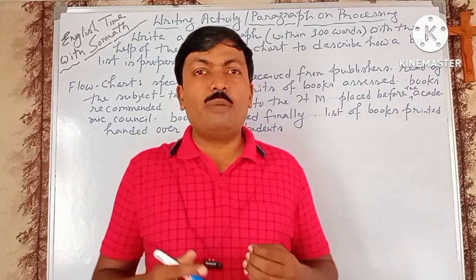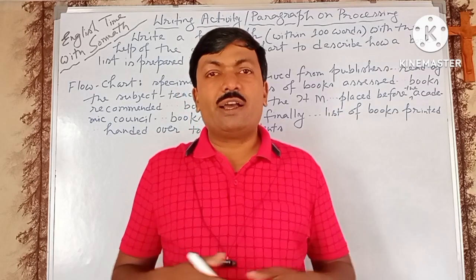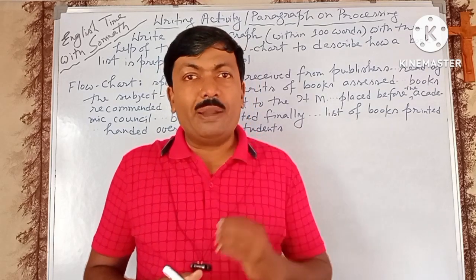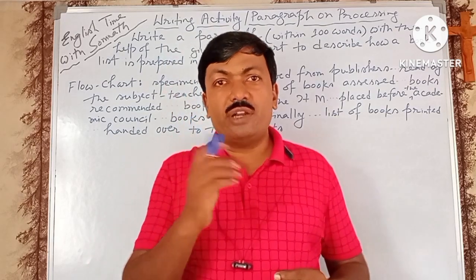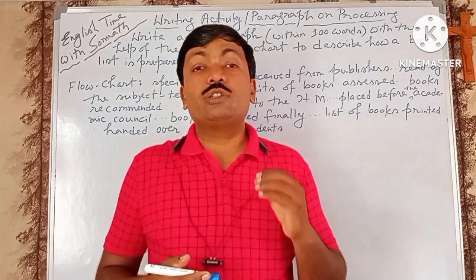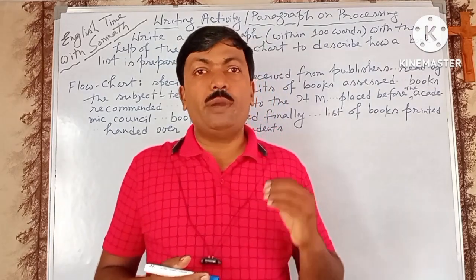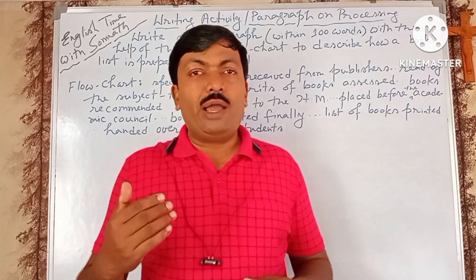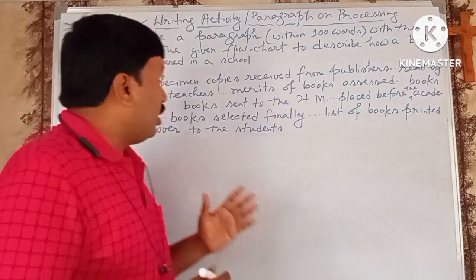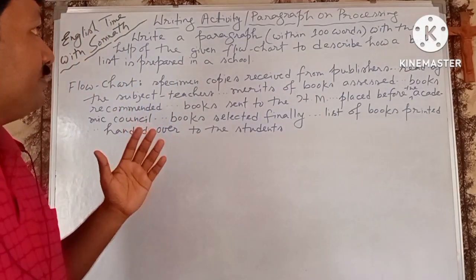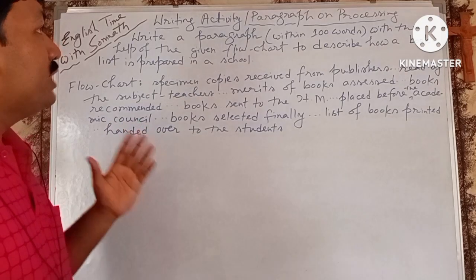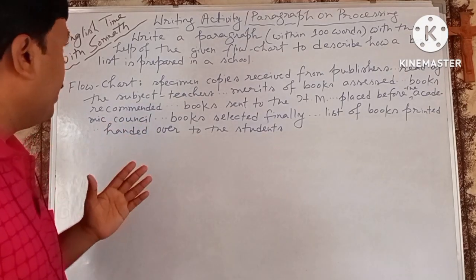We have to think about the first step. We have to write a paragraph within 100 words, with the help of the given flowchart, to describe how a book list is prepared in a school.